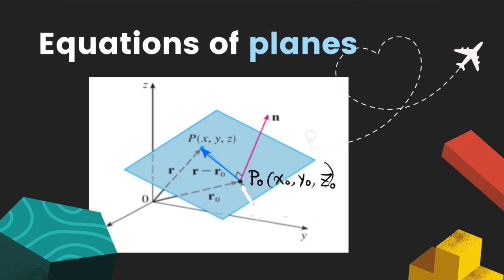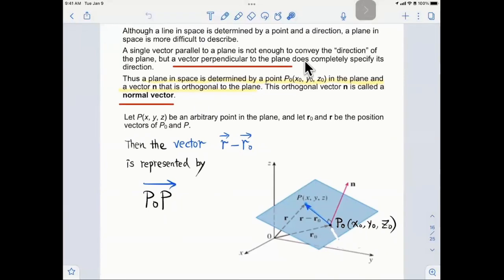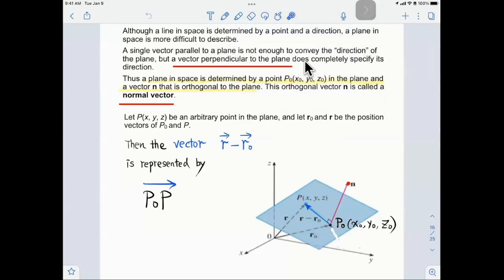We're going to continue to talk about planes — equations of planes. Here we have a picture of a plane. Now what else do I need to determine this plane? If we know this normal vector, which is a vector that is perpendicular to the plane, and I know this point on the plane, then this plane is determined. So you need two pieces of information: a point on the plane, and a vector perpendicular to the plane, which is called the normal vector.